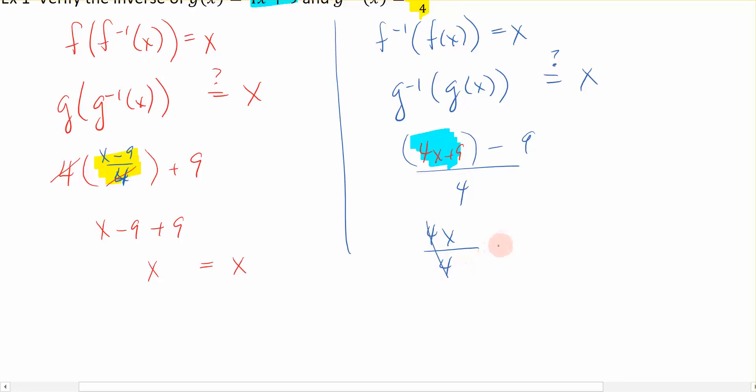My 4s cancel, and that leaves me with x, which is the x that I was supposed to come out with. So it works not only in one direction, but it also works in the opposite direction.